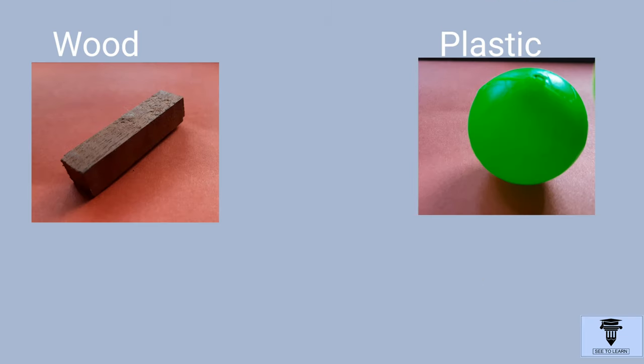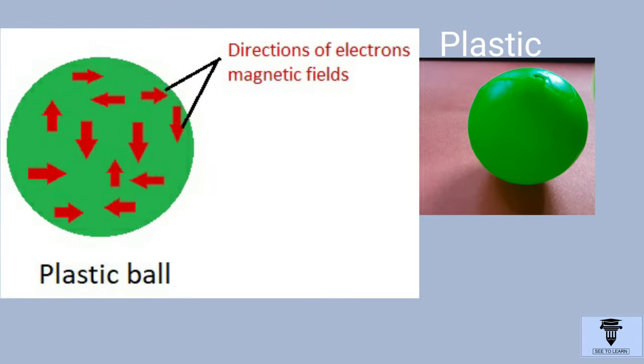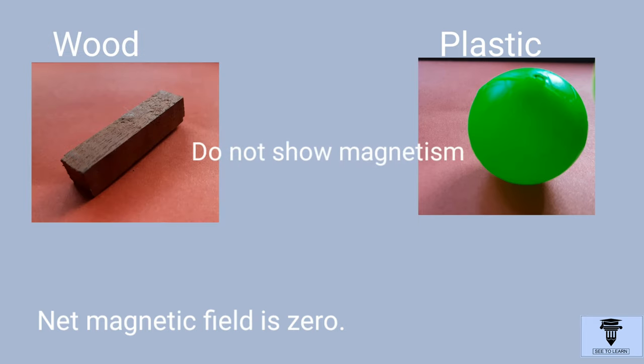But in most of the materials like wood, plastic, etc., the magnetic fields point randomly in all directions. Therefore, they cancel out each other and the net magnetic field becomes zero. So, such materials do not show magnetism.